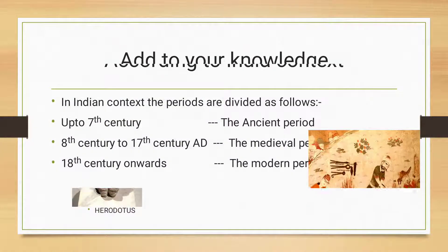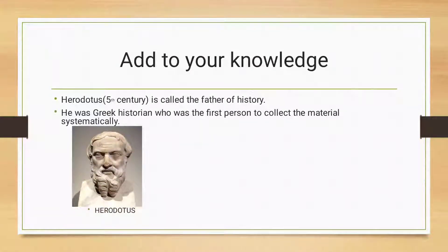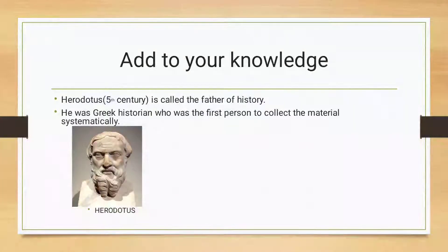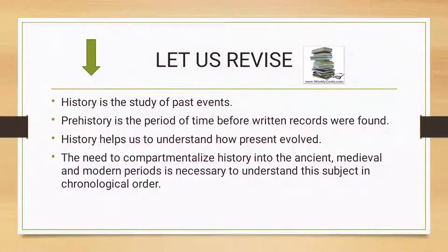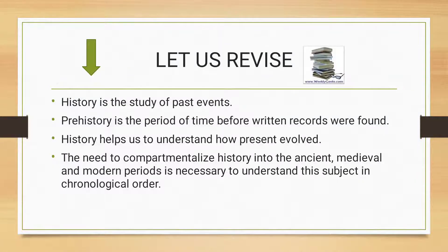Just to add to your knowledge: Herodotus is called the father of history. He was a Greek historian who was the first person to collect material systematically, test its accuracy, and arrange it in a systematic manner. To revise the summary of the chapter: history is a study of past events, particularly in human affairs. Prehistory is the period of time before written records were made. History helps us to understand how the present evolved.